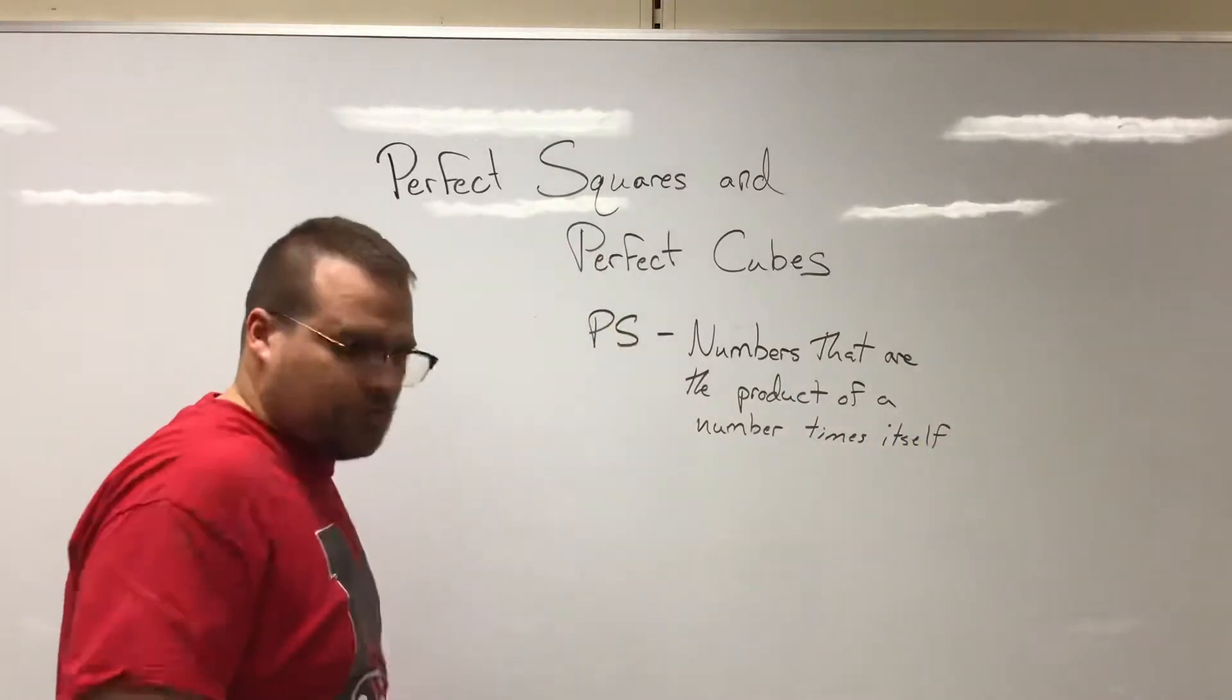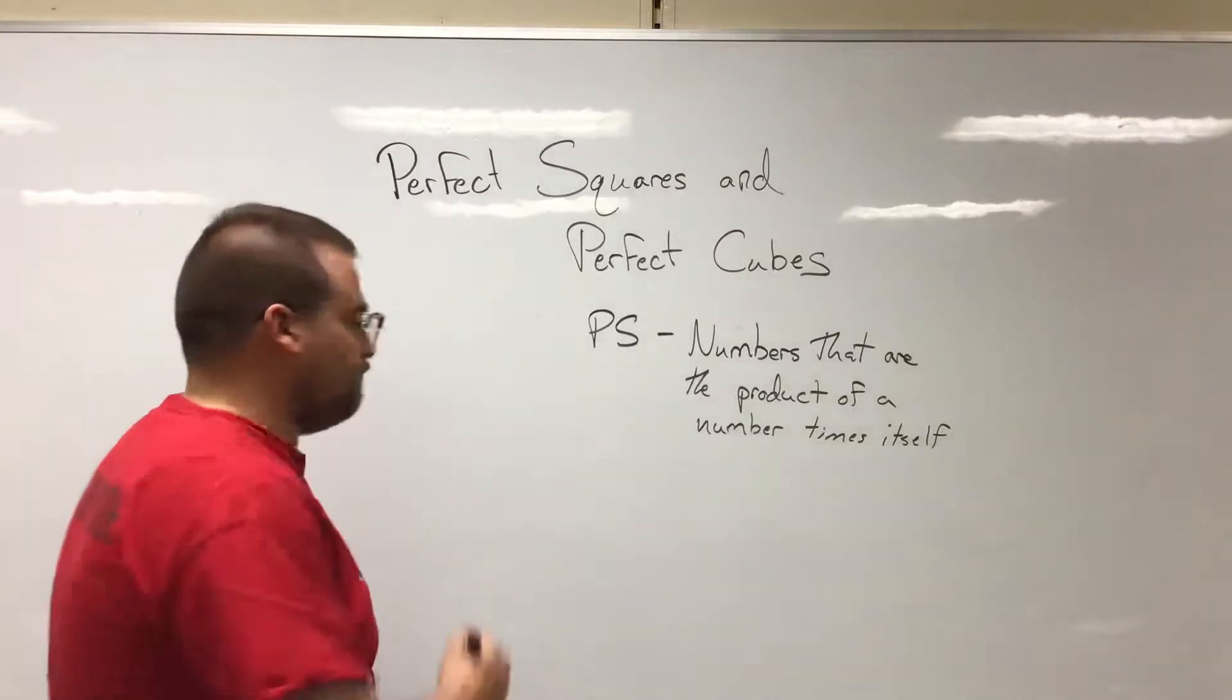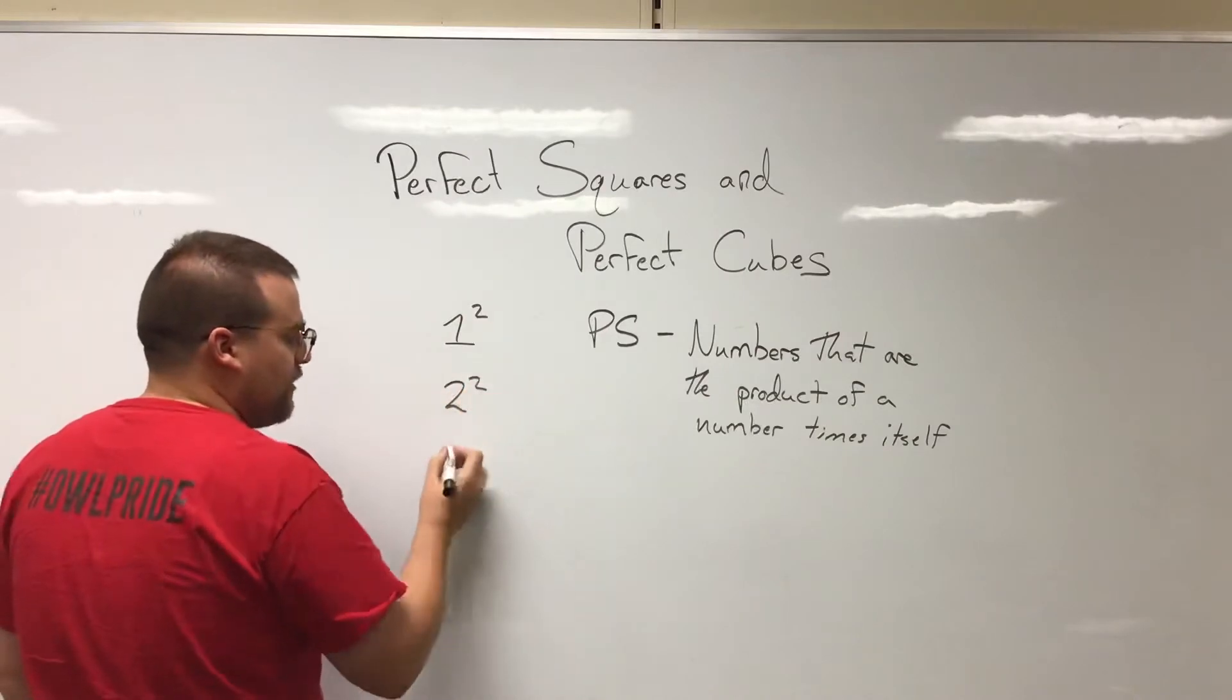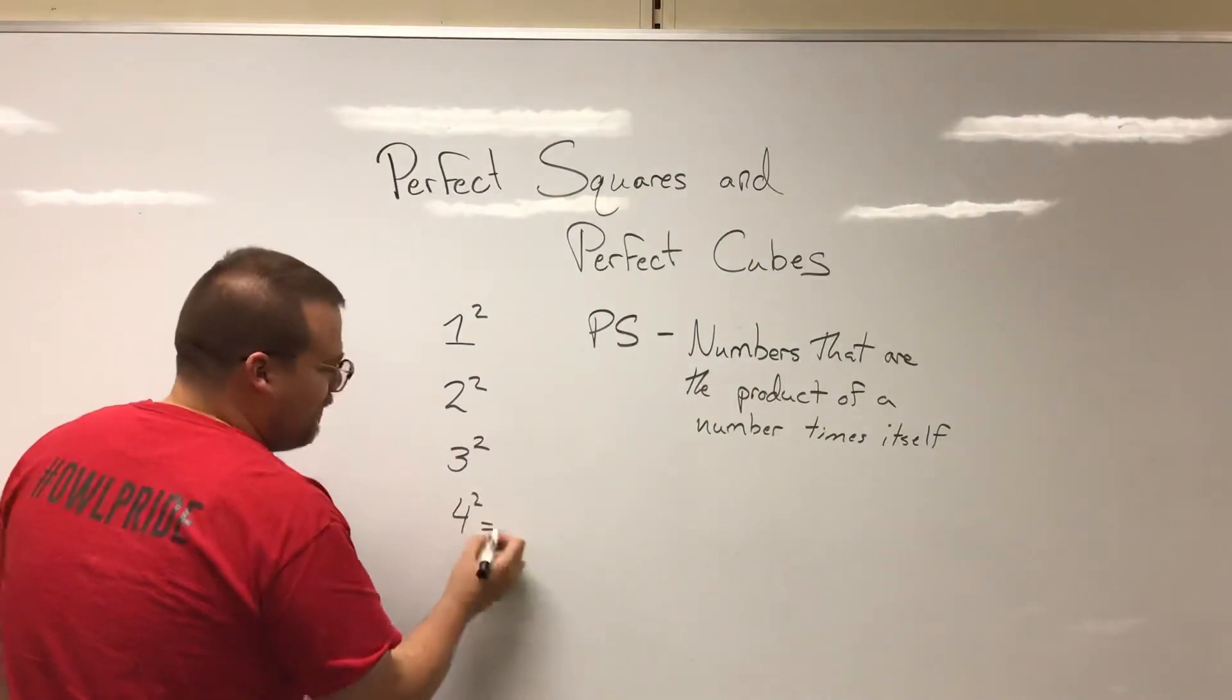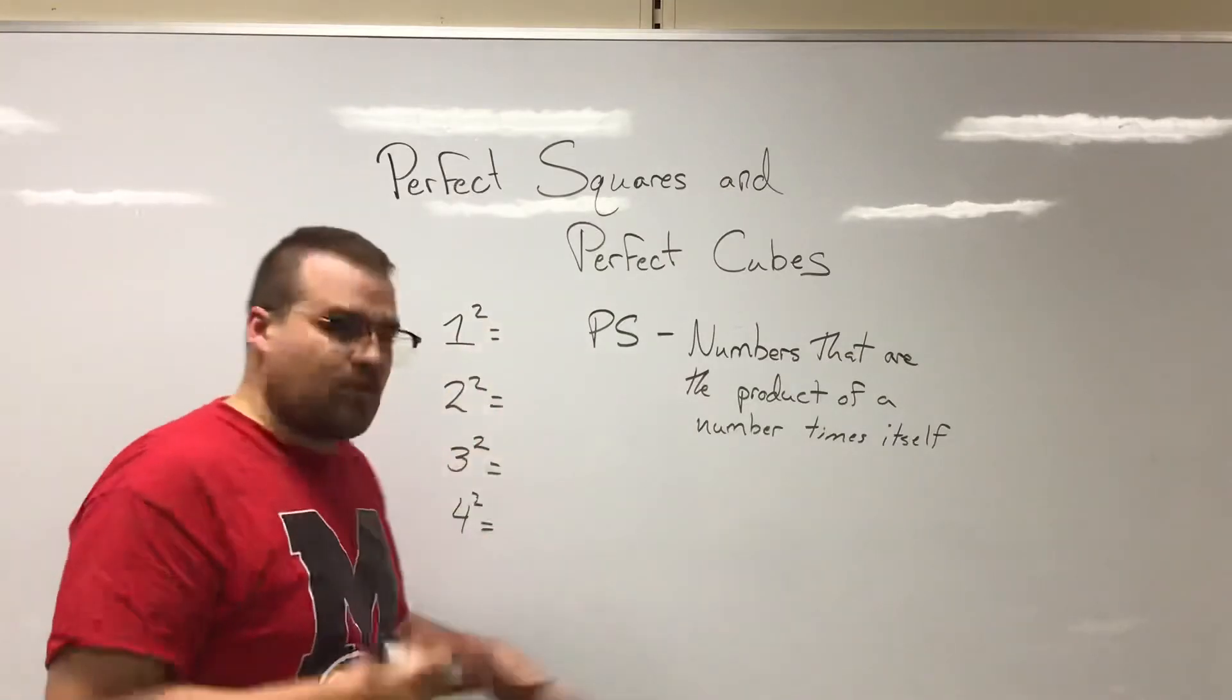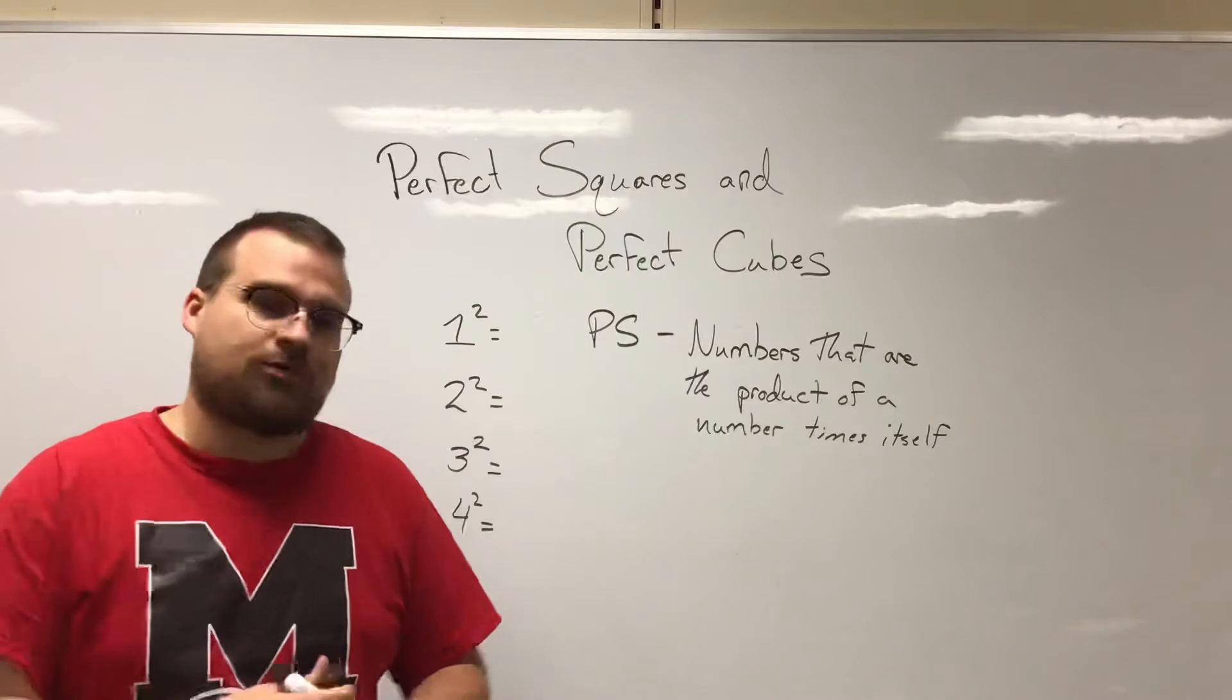So let's do some examples. Any number could be squared, such as one squared, or two squared, or three squared, or four squared - any of them, right? If we figure out what these numbers are equal to, we'll be able to make a list of perfect squares.